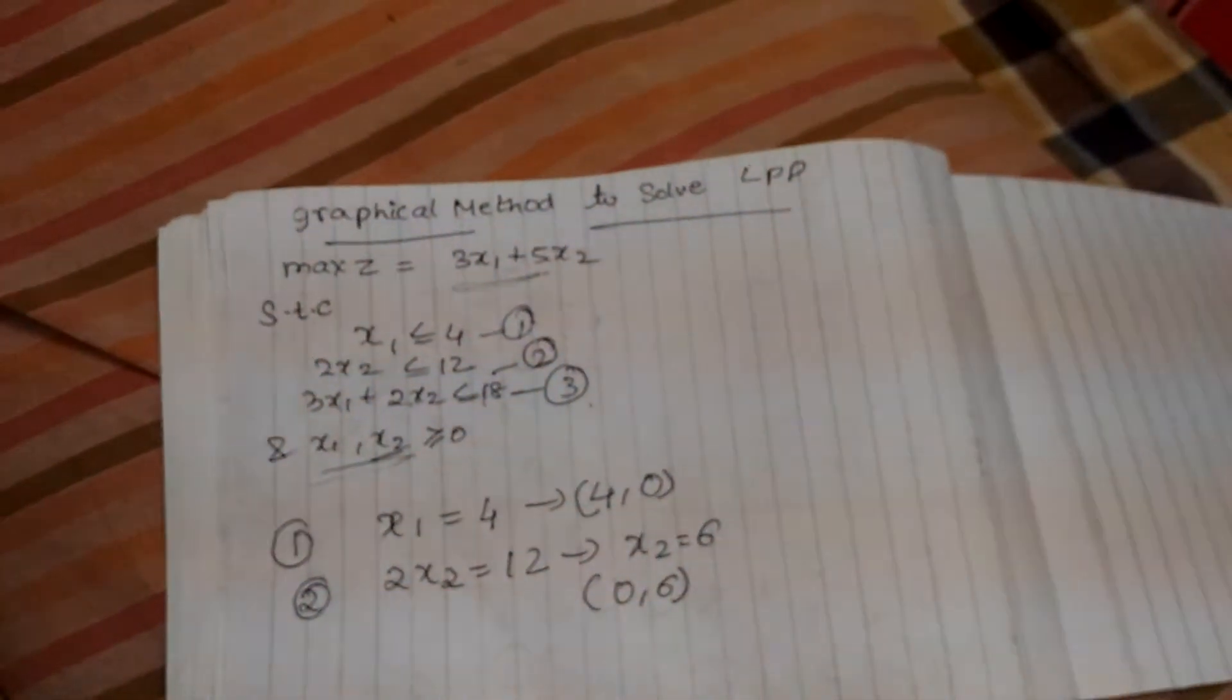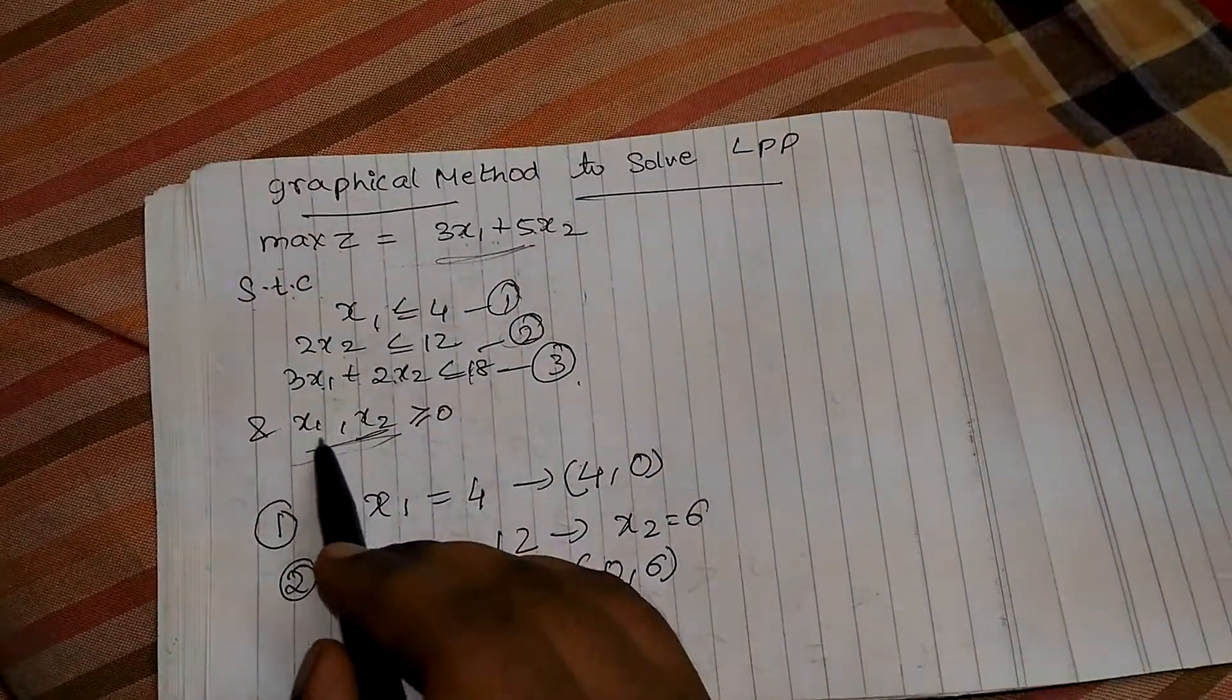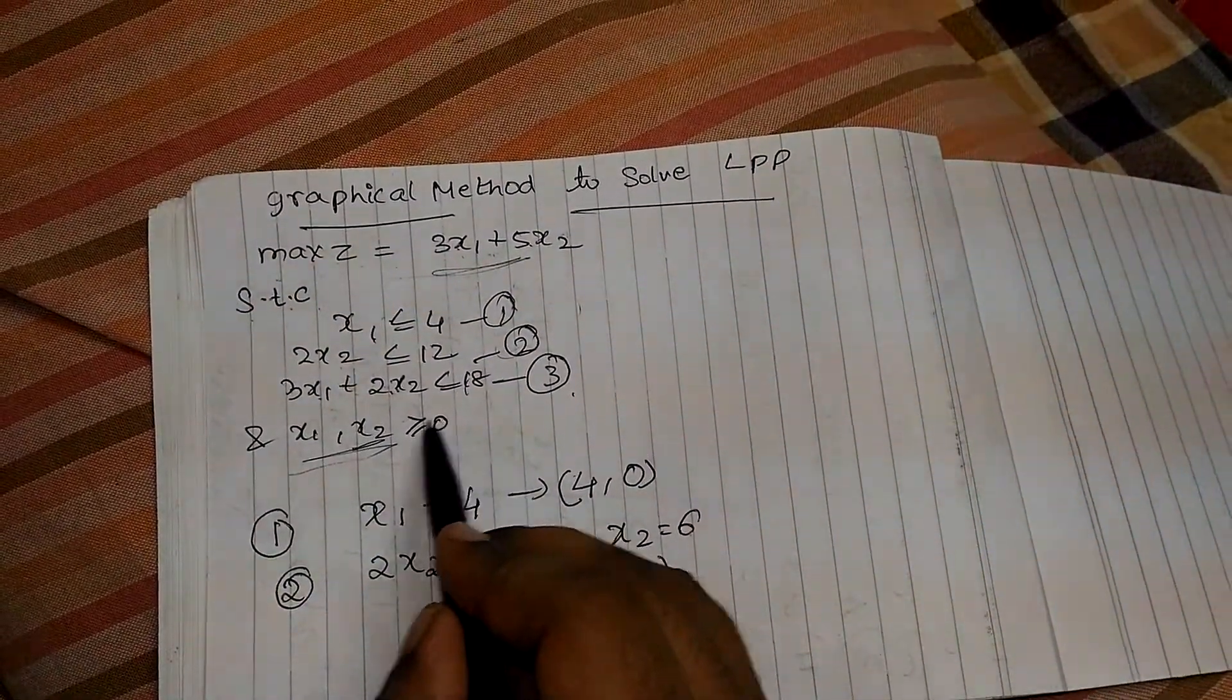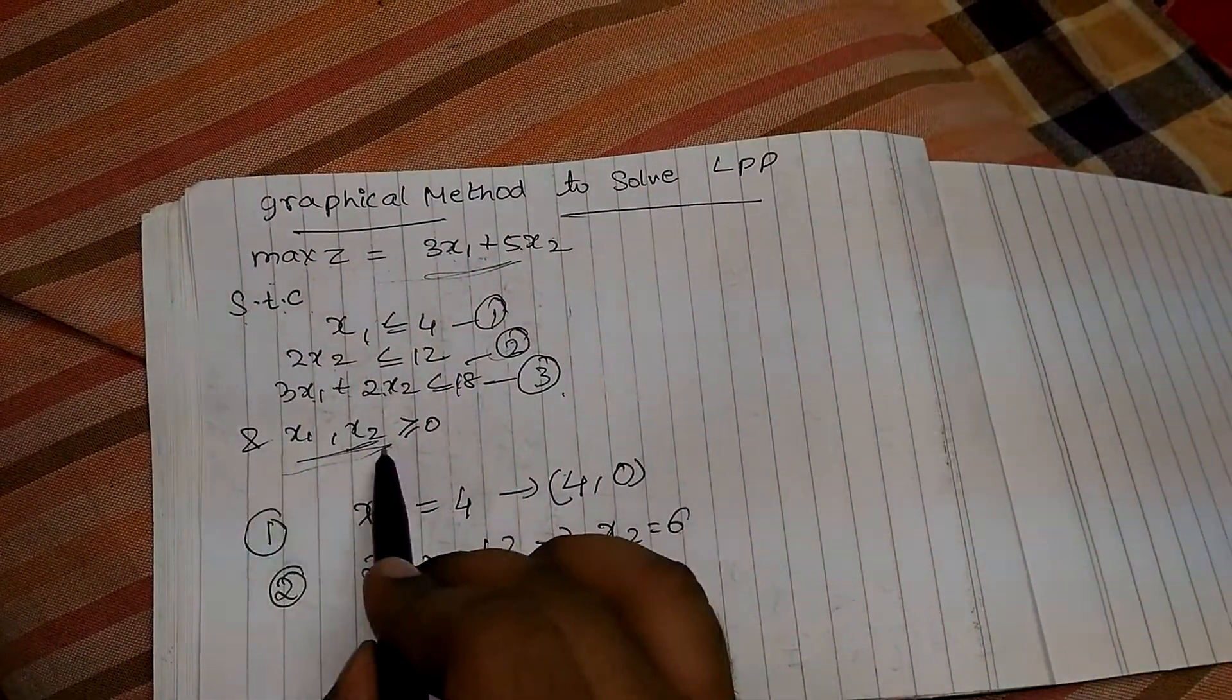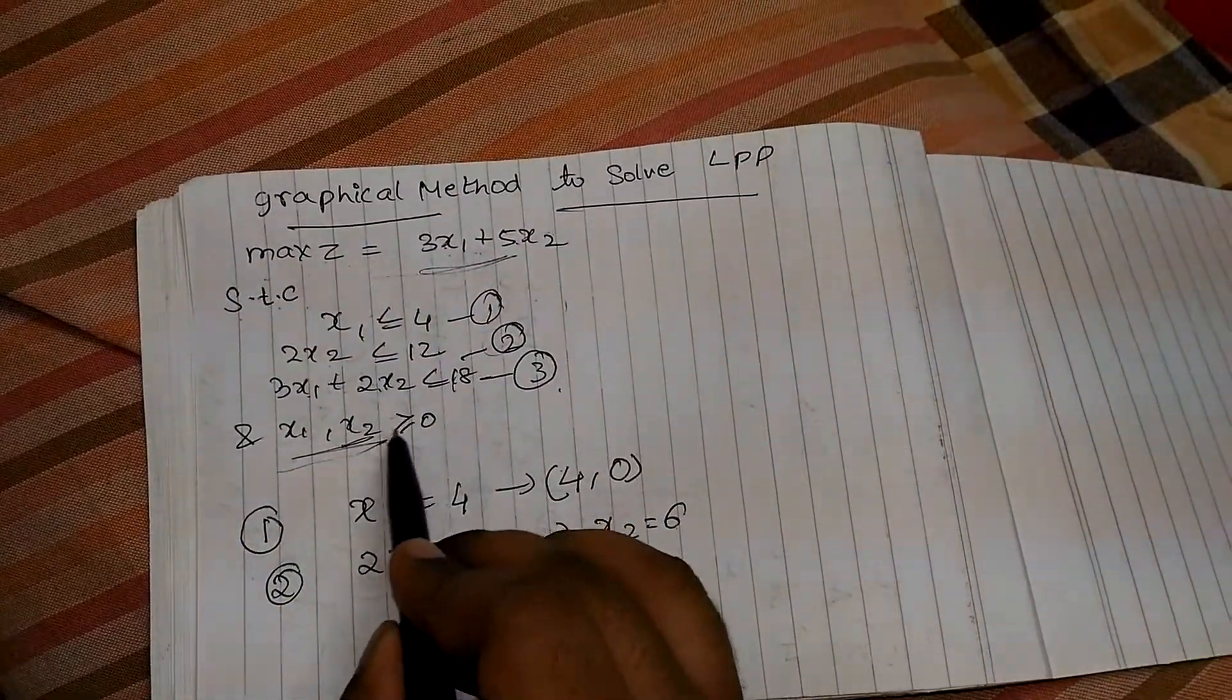And this is the non-negativity constraint. x1, x2 is greater than equal to 0. Always the non-negativity constraint is written as greater than equal to 0.